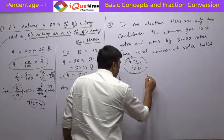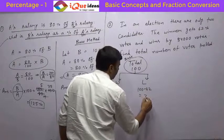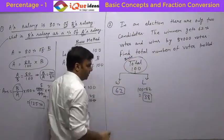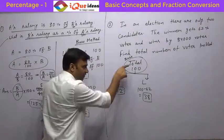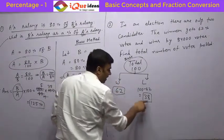So the loser must get 100 minus 62, that is 38 votes. So I am assuming the total votes to be 100, that means the winner must get 62 out of 100, so the loser must get 100 minus 62, that is 38 votes.